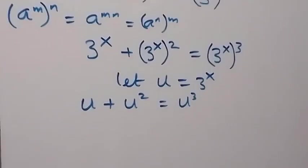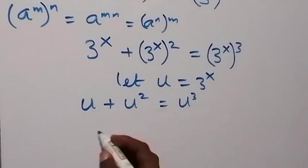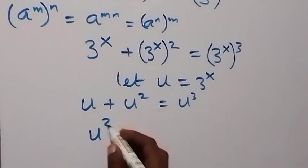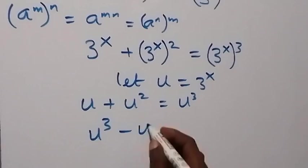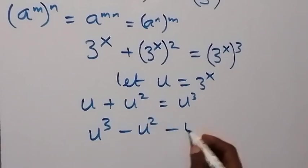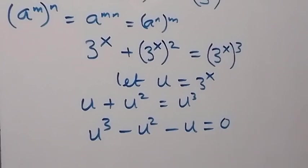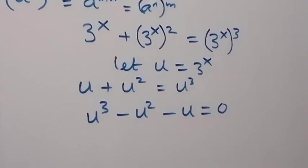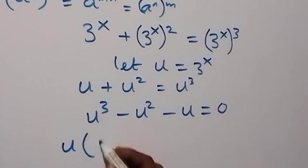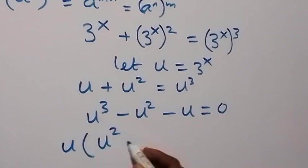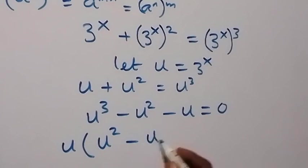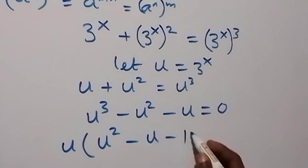Arranging and taking everything to one side, we have u cubed minus u squared minus u equals zero. From here, we factor out u, giving u times the bracket u squared minus u minus 1 equals zero.